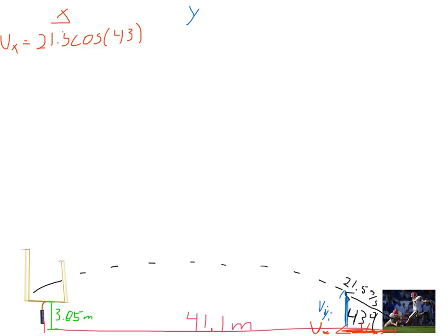Opposite, right, is the X component opposite, excuse me, adjacent for the X component over the hypotenuse. That would be cosine. Likewise, with the Y component, we're going to need to use sine. So the initial velocity in the Y is going to equal opposite sine, right, 21.5 sine 43 degrees.